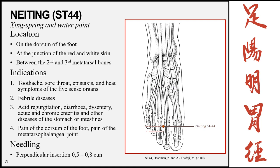Neiting, Stomach 44, is the ying-spring and water point of the meridian, on the dorsum of the foot at the junction of the red and white skin between the second and third metatarsal bones — just posterior to the crease between these two toes. Indications: toothache, sore throat, epistaxis, heat symptoms of the five sense organs, febrile diseases, acid regurgitation, diarrhea, dysentery, acute and chronic enteritis, other diseases of the stomach or intestines, and locally for pain of the dorsum of the foot and the metatarsal-phalangeal joint. Insertion is perpendicular, 0.5 to 0.8 cun.